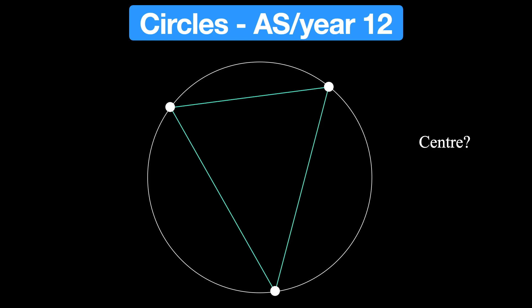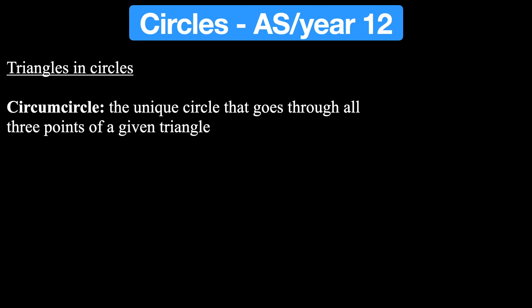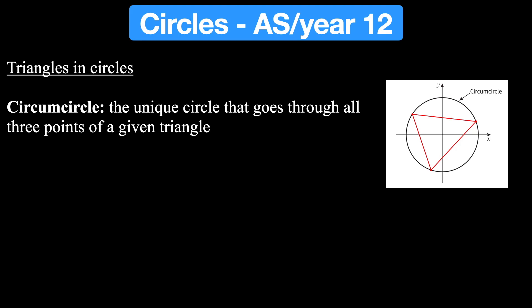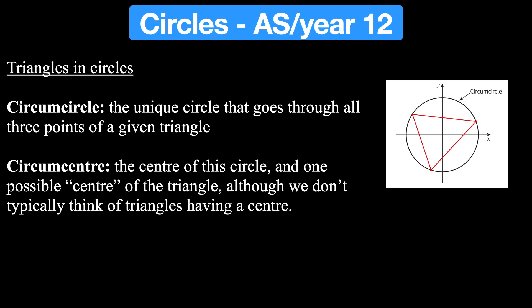So let's start off with some definitions. When you're looking at triangles in circles there's something called the circumcircle. This is the unique circle that goes through all three points of a given triangle — there's only one possible circle you can draw through all three corners. Then you have the circumcenter, which is the center of this circle and one possible center of the triangle. Another example is something called the centroid. There are many different types of centers of triangles, so I'd suggest googling that if you want to research more.